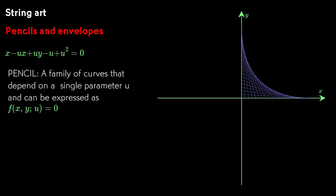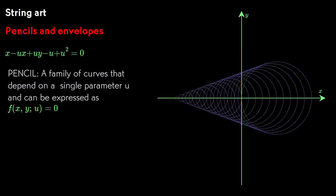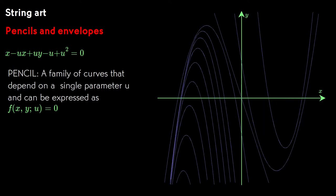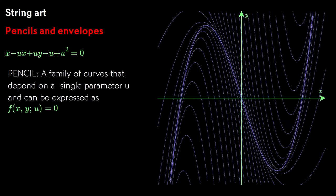We can speak of a pencil of circles or a pencil of parabolas or indeed any curve we choose. You've probably noticed that all of these examples have a curve that's approximated by segments of the curves that make up the pencil and that adding more curves to the pencil makes the approximation closer. We can formalize this mathematically.